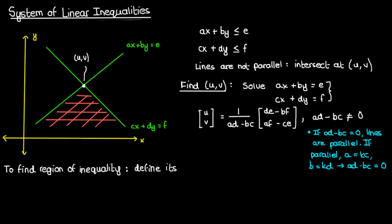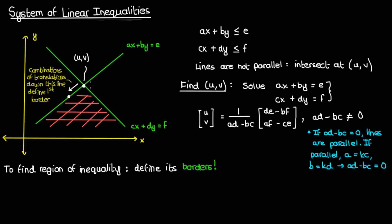The first thing we do is define the borders of this region of the inequality. We can start by traversing or translating down the straight line ax plus by equals e. The combination of translations that we can do to move our point of intersection down this line will define one border of the inequality region. Similarly, to define the second border, we start at u comma v and traverse or translate down the second line cx plus dy equals f.